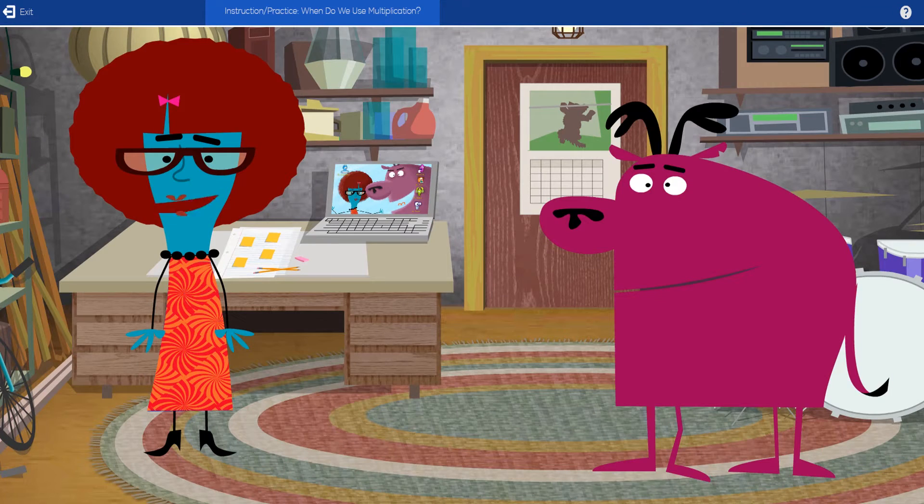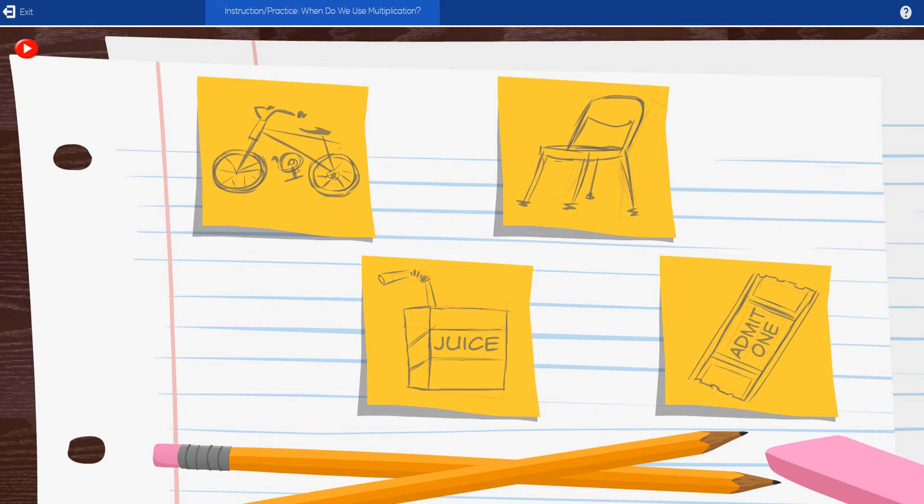Okay, so recently there have been a couple of times where JT could have used multiplication to solve a problem. Let's take a look at each and see how multiplication could have helped him out. Click on each example to learn how it relates to multiplication. Be thinking about what all of these examples have in common.